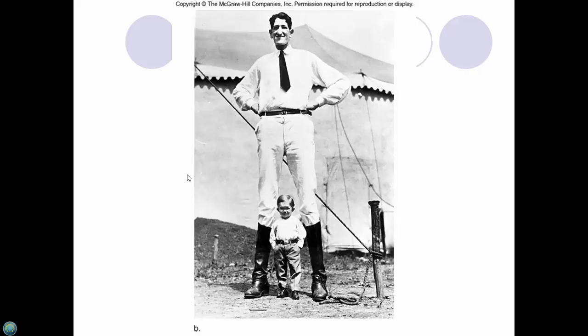Tall basketball or volleyball players on campus don't have tumors — they're just genetically large. That's not the same issue. If someone has the tumor problem, they'll continue to grow in places they don't want to. This other man is a pituitary dwarf — he didn't produce enough growth hormone when he was little.